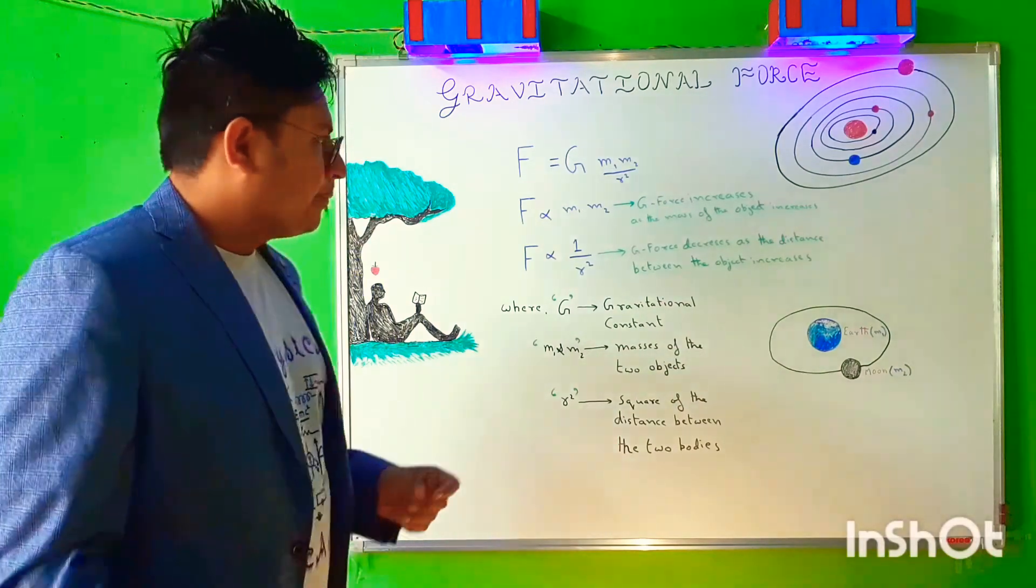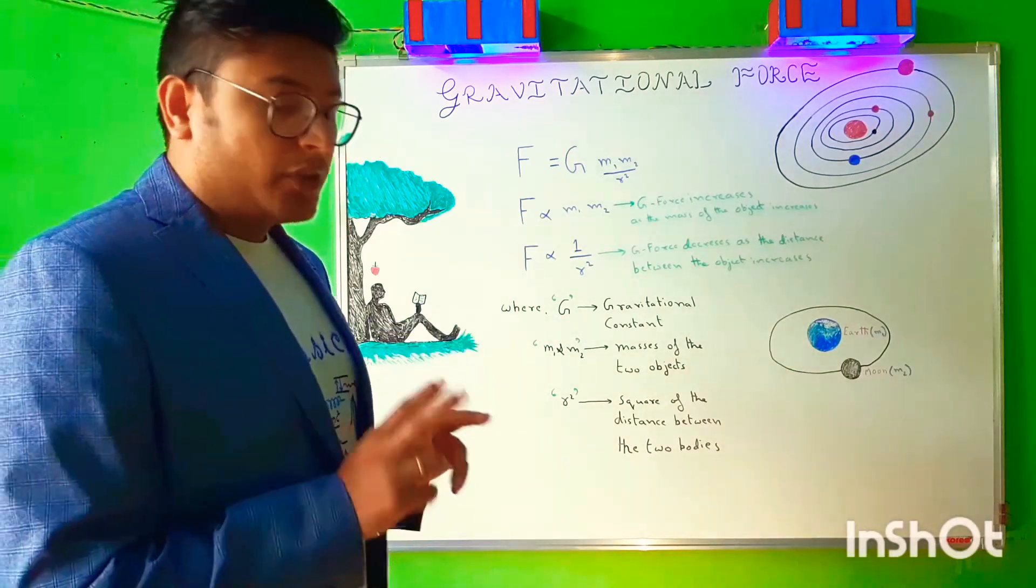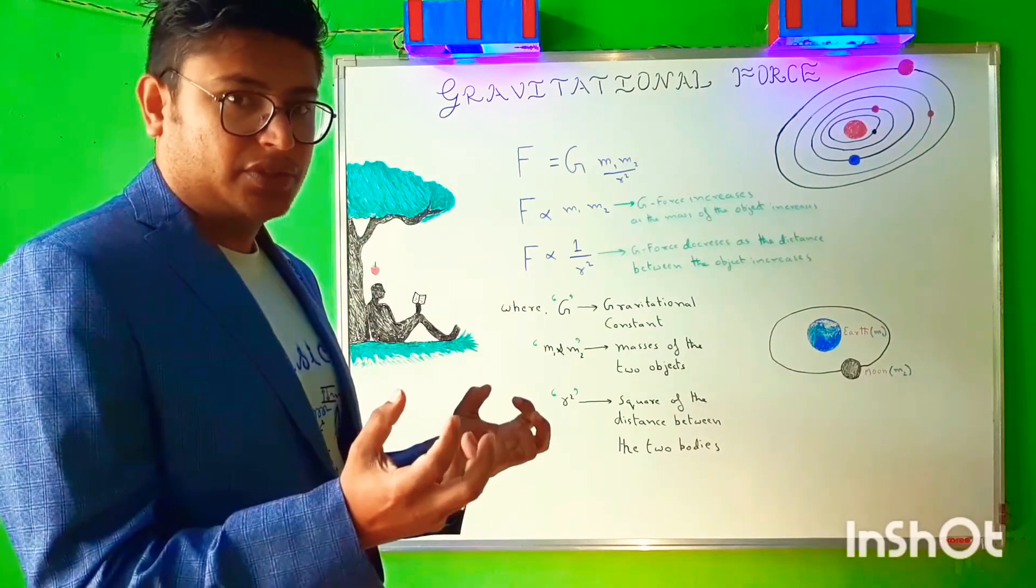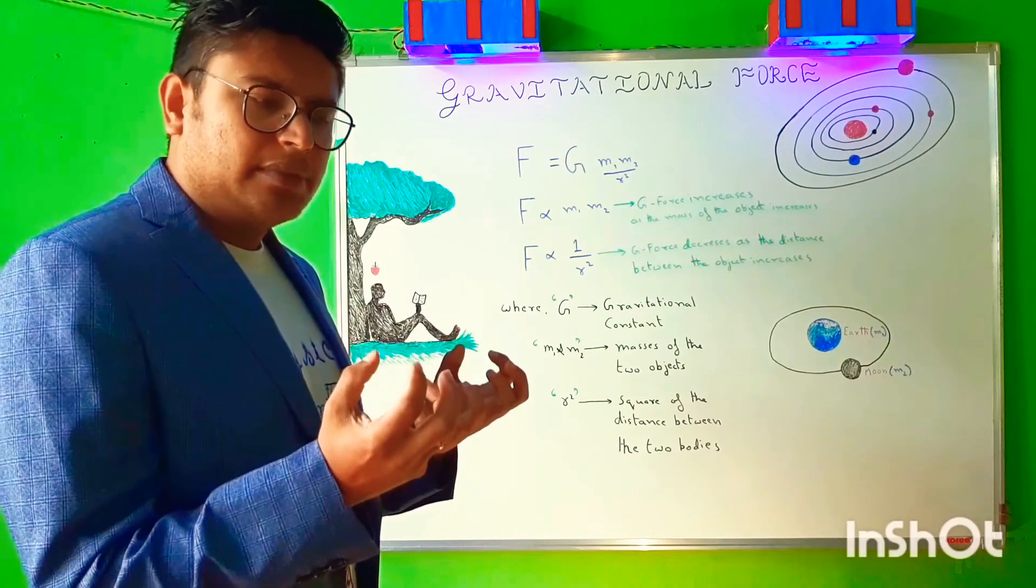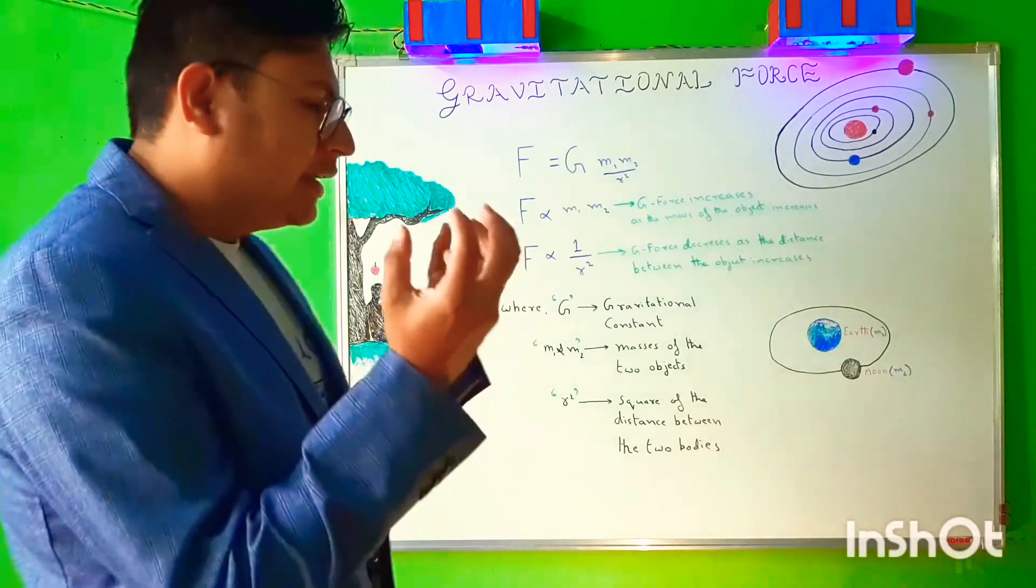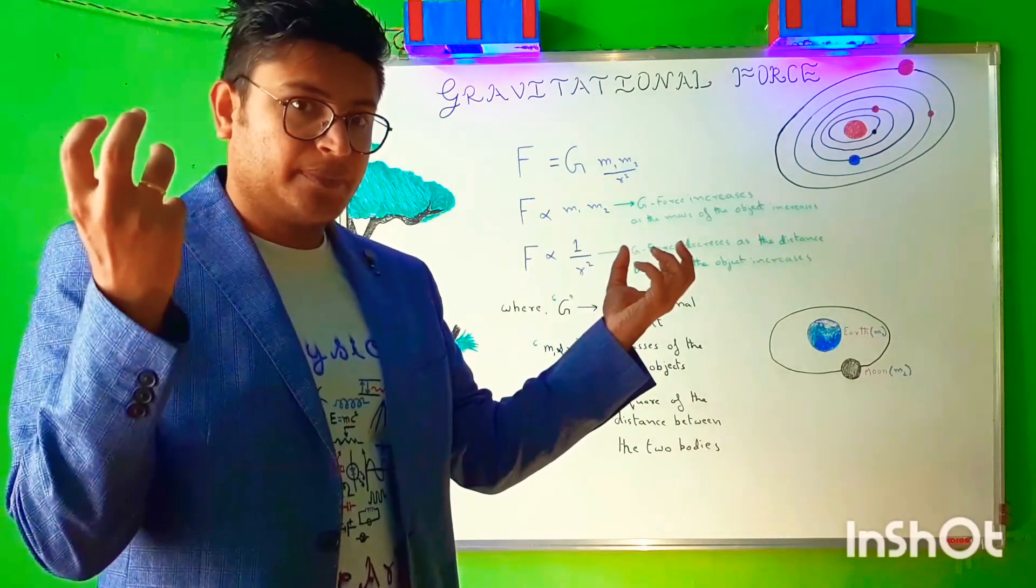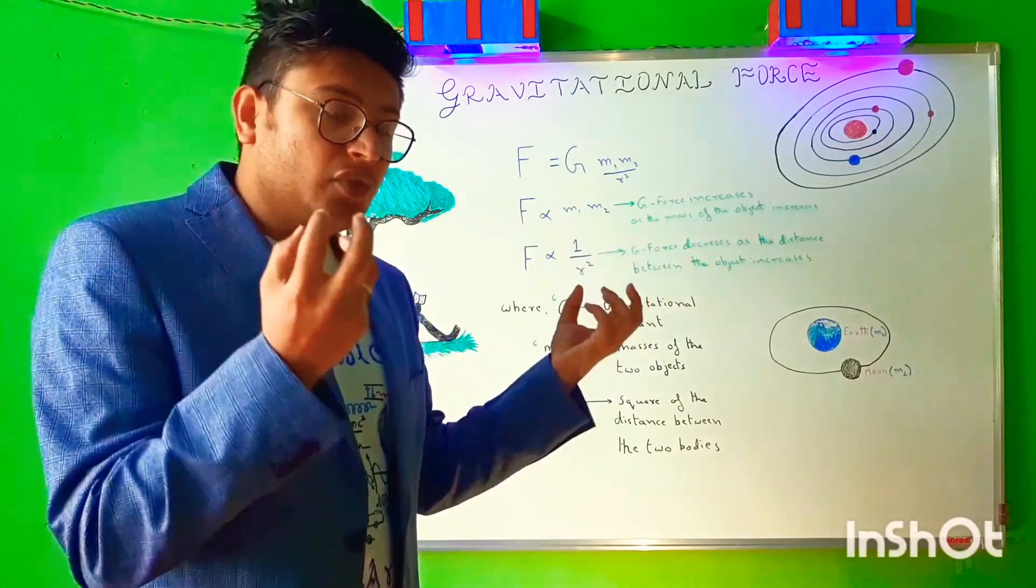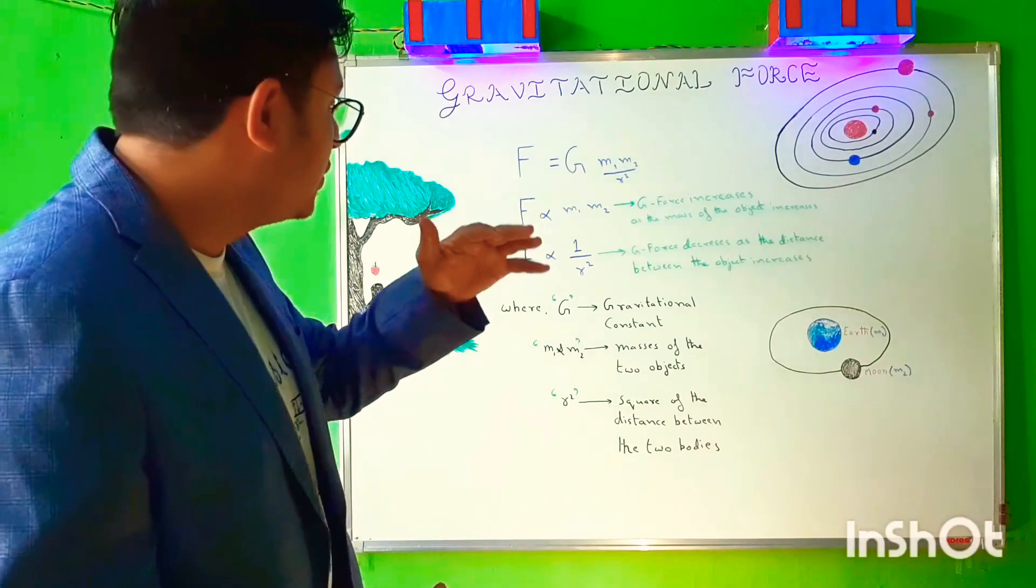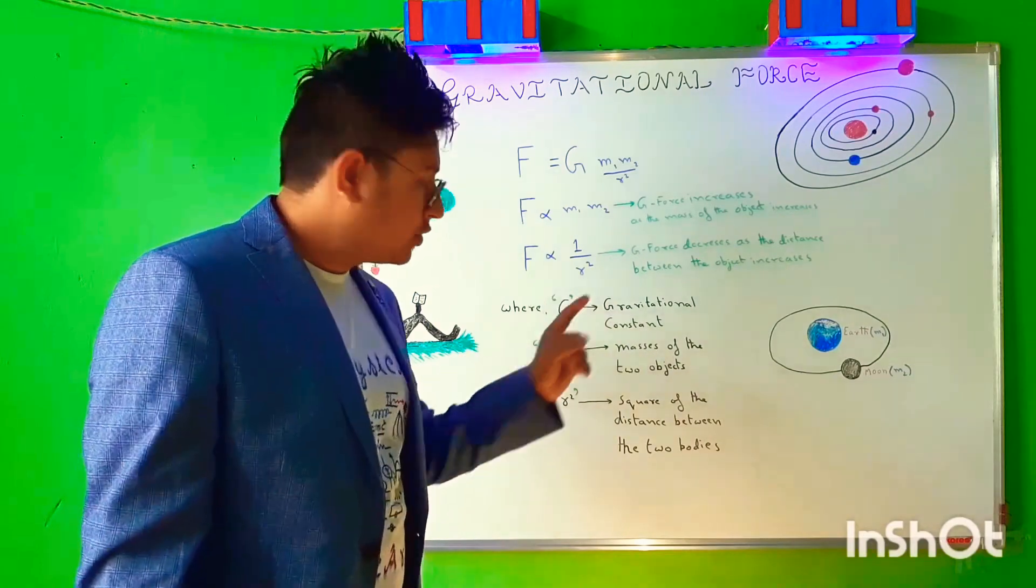So in this particular case, when I increase the mass of the two objects, the gravitational force increases. And when I decrease the mass of the two objects, the gravitational force decreases. Also, when I increase the distance between the two objects, the gravitational force decreases. And when I decrease the distance, the gravitational force increases. That's why it is inversely proportional.